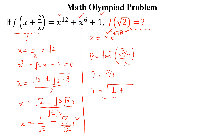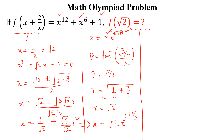Similarly, r = √(1/2 + 3/2), and if we simplify this, we get r = √2. So x = √2·e^(±iπ/3). Now we will calculate x^12. We have x = √2·e^(±iπ/3).